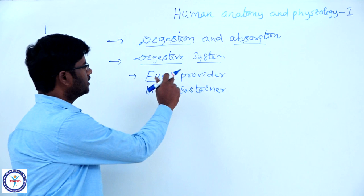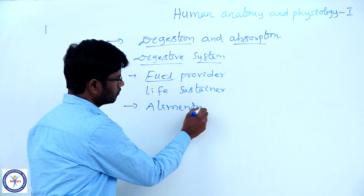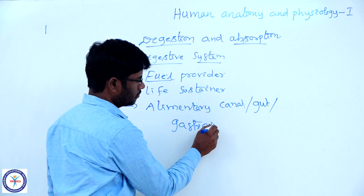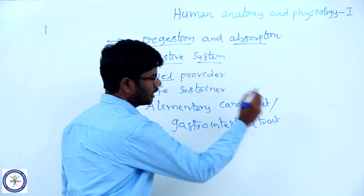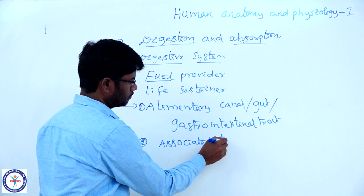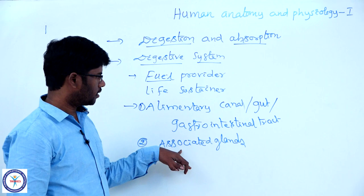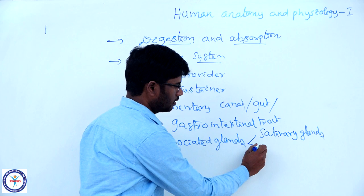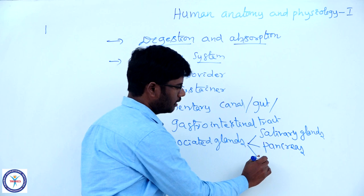The digestive system includes the elementary canal, also referred to as the gut or gastrointestinal tract. One more component of the digestive system is associated glands. There are three kinds of associated glands: salivary glands, pancreas, and liver.